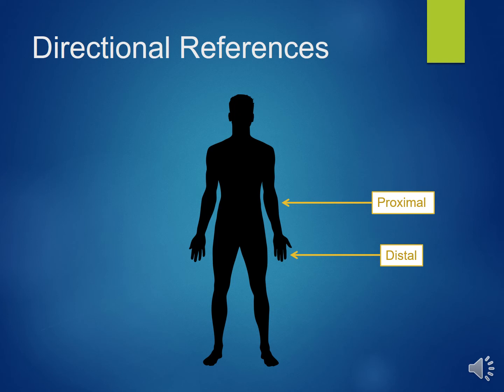Directional terms are important when discussing anatomy. Distal is a term used to describe a part of the body that is away from the side of attachment to the body. For example, the wrist is distal to the elbow. It may help to think of distal as distance, as it is farther away from the attachment point of the appendage to the body.